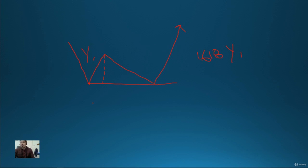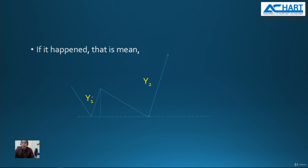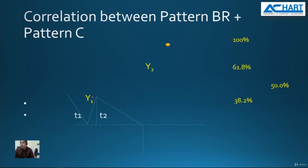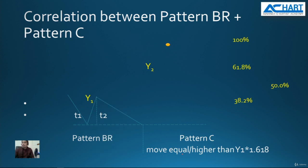We are looking forward to this pattern either for a buying opportunity or to let our profit run. You must have a bottom reversal pattern, and y2 must be equal to 1.618 of y1. If that happens, it means that when we trace — if y2 retraces — it has a high chance to retrace 61.8 percent of the Fibonacci proportion. If it hits the target, this is the bottom reversal pattern and there is a continuation pattern, and the new target must move equal to or higher than y1 times 1.618.